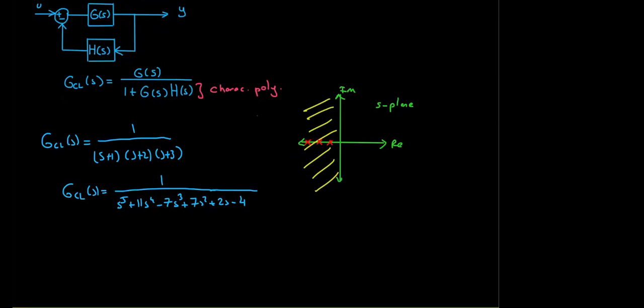Student question: is having a pole at the origin okay? No — the 1/s term is an integrator. In terms of bounded-input bounded-output stability, if you apply a step input to an integrator, the output is a ramp function, which is unbounded. Therefore a pole at the origin violates stability, and the imaginary axis is indeed not included in the stable region.